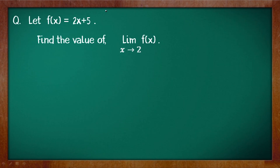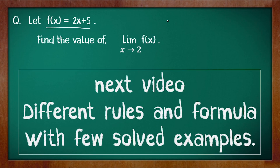Moving on, let f(x) = 2x + 5. Try to find lim (x→2) f(x) using the same process — take values like 2.1, 2.01, 2.001 from the right and 1.9, 1.99 from the left, and comment your answer below. In the next video, we'll work on different rules and formulas with solved examples, which is the standard way to solve limit problems.